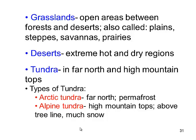Tundras are found in the far north and on high mountain tops. We have arctic tundras where permafrost — ground that never thaws — exists, in places like Alaska or Antarctica.